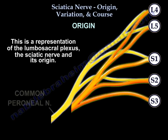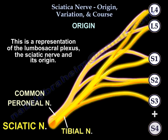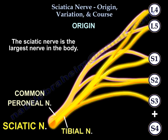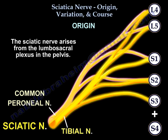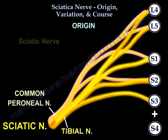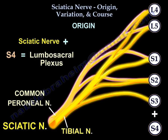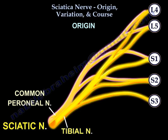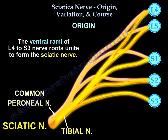Here is a picture of the lumbosacral plexus and you can see the origin of the sciatic nerve. The sciatic nerve is the largest nerve in the body. It arises from the lumbosacral plexus in the pelvis — the sciatic nerve plus S4 equals the lumbosacral plexus. The ventral rami of L4 to S3 nerve roots unite to form the sciatic nerve.